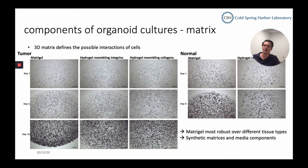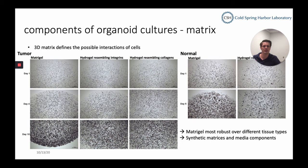When we tested different hydrogels against Matrigel in tumor and normal organoids, most tumor organoids worked fine in a hydrogel resembling integrin or collagen binding sites, though the density was less than in our Matrigel control. We also had some tumor organoids that didn't grow at all in these hydrogels. For normal organoids, which form nice cystic structures in Matrigel, a hydrogel resembling integrin binding sites led to very dense organoids — nothing comparable to the Matrigel culture. So there is a clear need for better synthetic matrices.